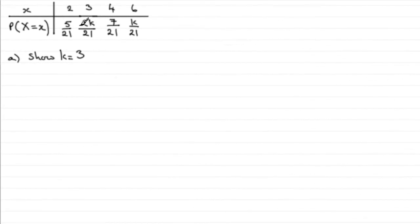Now in this question we're given this probability distribution for the random variable x, and in the first part we've got to show that k equals 3. And to do this, this is based on the fact that the sum of all your probabilities for your distribution should total 1.